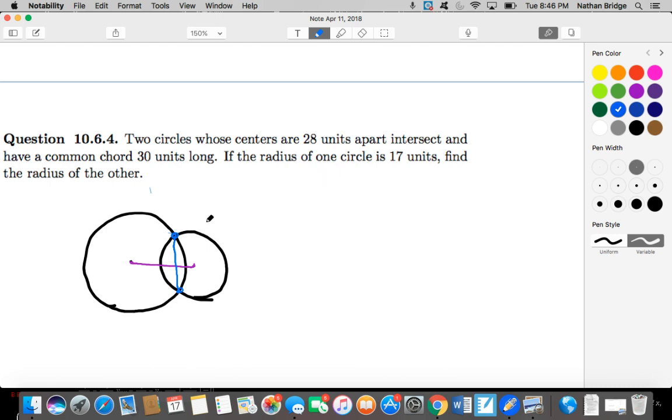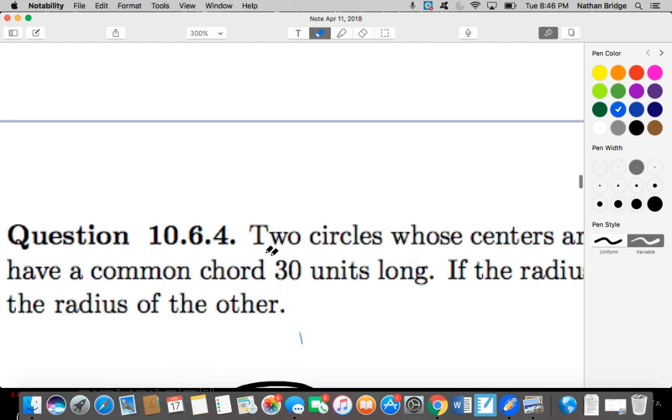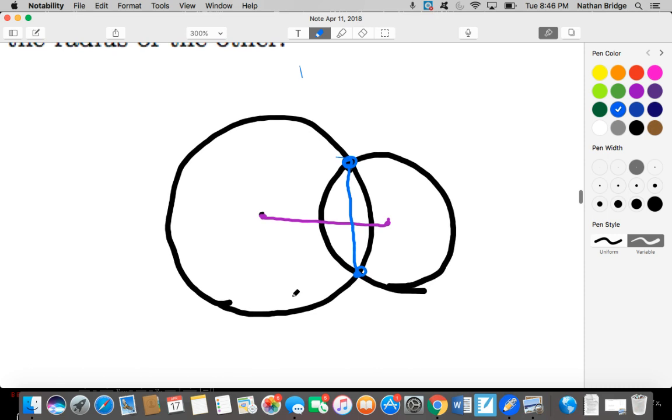Okay, there we go. Well, one of the things that we know from what we learned today is that if the radius is perpendicular to a chord, then it has to bisect the chord.